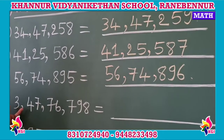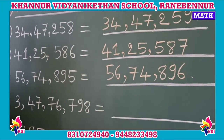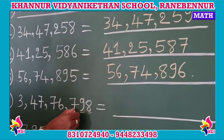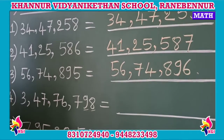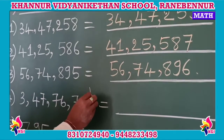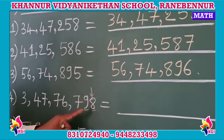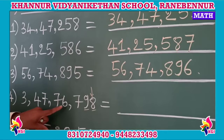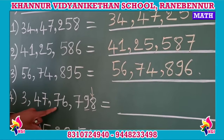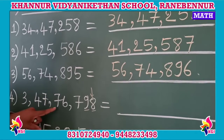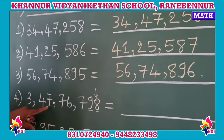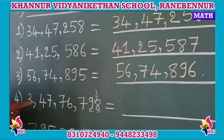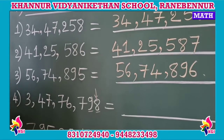Now we will go to the fourth number. My dear kids, how many digits are there? 1, 2, 3, 4, 5, 6, 7, 8 — it is an 8-digit number. Here: 8 is in the ones place, 9 is in the tens place, 7 is in the hundreds place, 6 is in the thousands place, 7 is in the ten-thousands place, 4 is in the ten-millions place, and 3 is in the crores place.